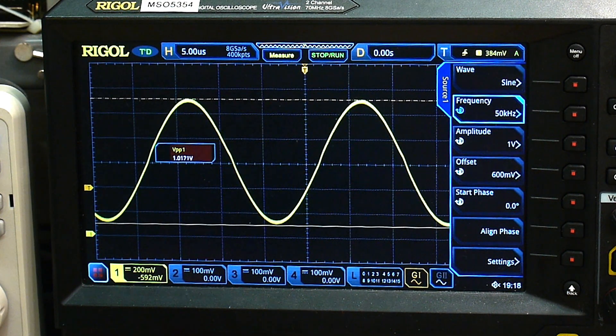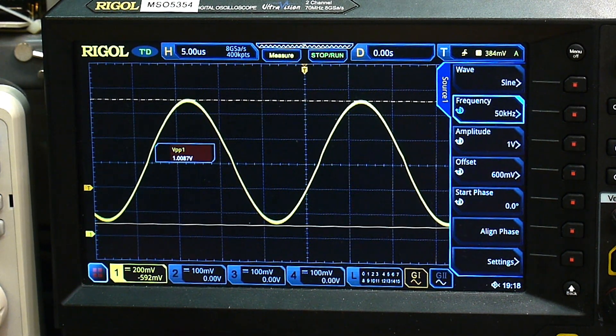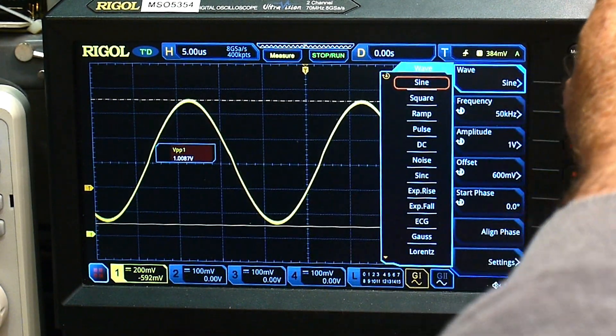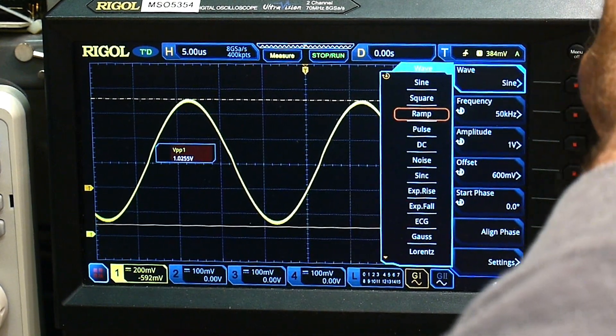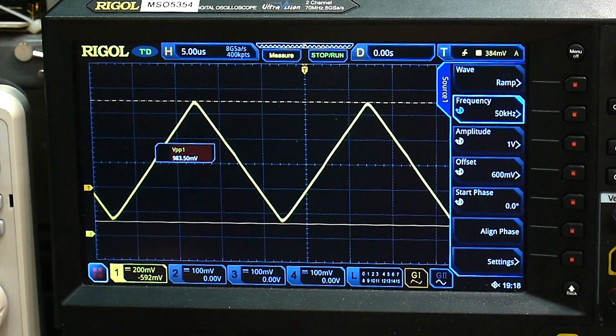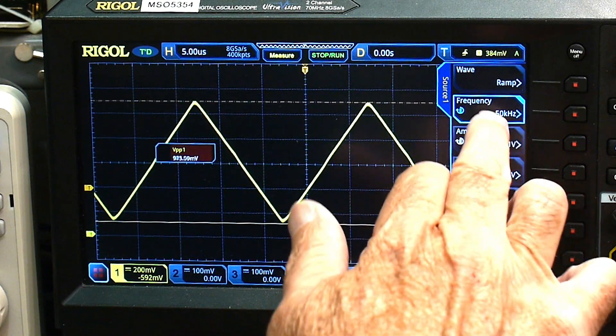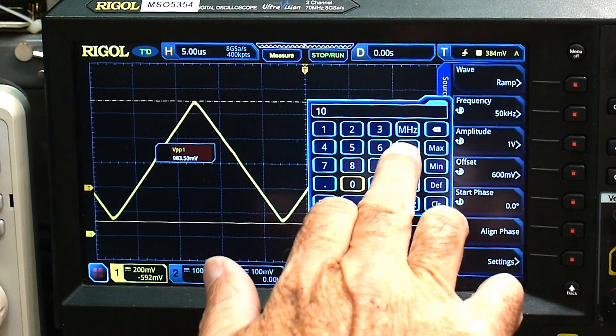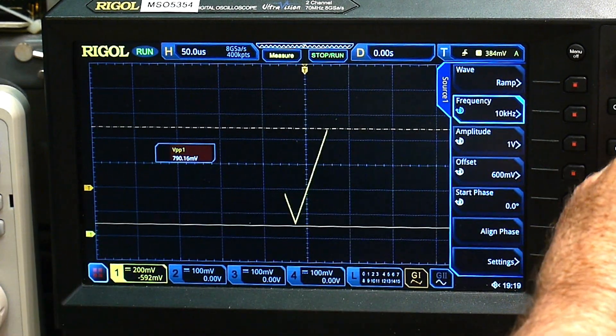It does have some crossover distortion. So let's go back to, let's see here. Well, we can do other things. We could do a ramp, ramps working great. Let's take it back to 10 kilohertz. Some nice little range for it. 10 kilohertz. There we go.